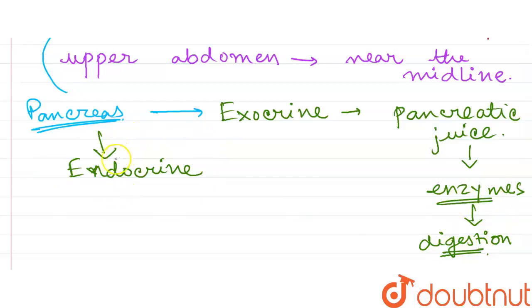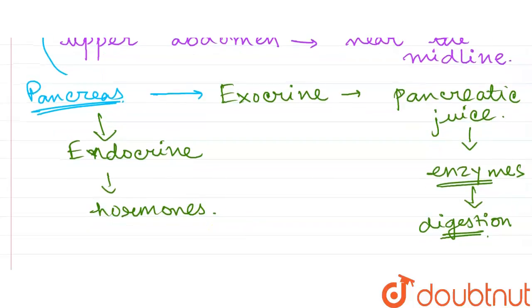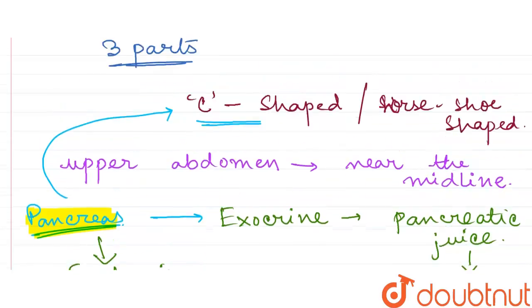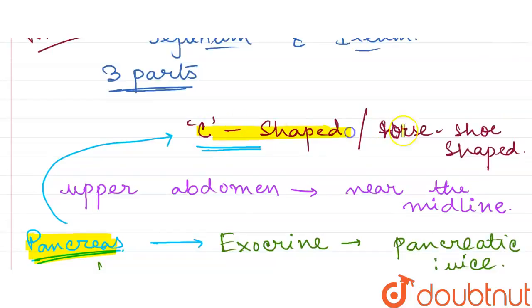And this endocrine portion releases some hormones like insulin and glucagon. So we can say that this organ pancreas lies in between the C-shaped area.